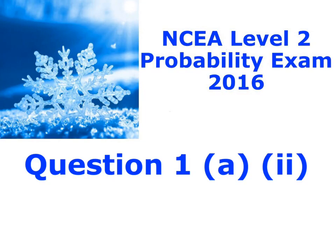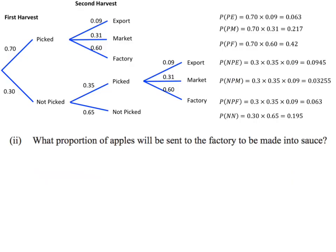We're looking now at question 1a part 2. I've got the table at the top which is the summary that we found in the previous video. We've got whether the apples are picked in the first harvest or second harvest and then whether they're sent to export, to market, or to the factory, or whether they're left on the tree and not picked at all.